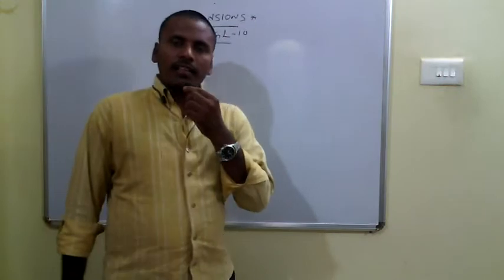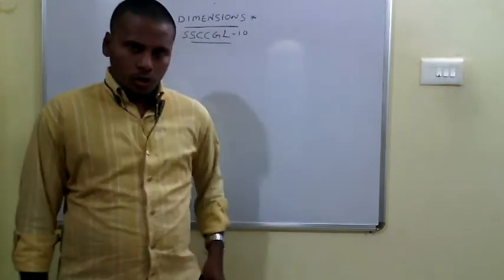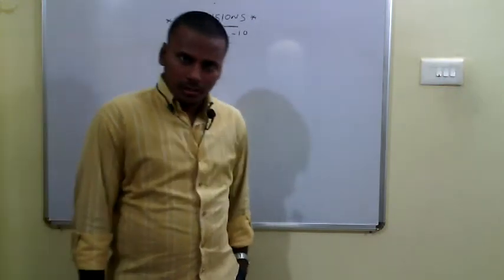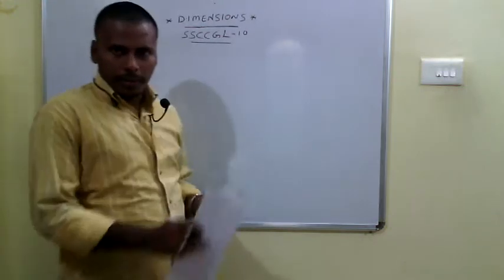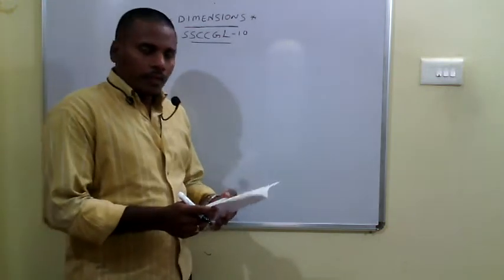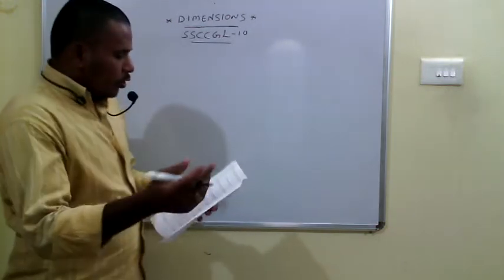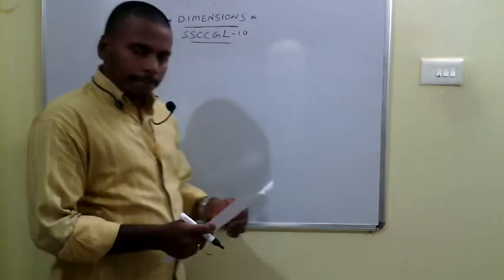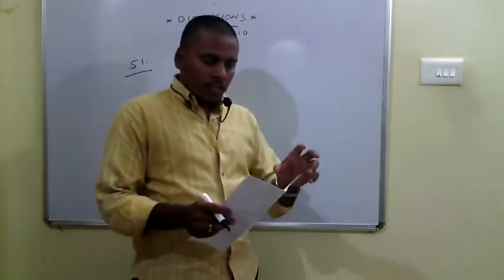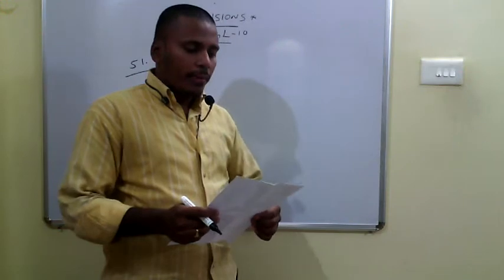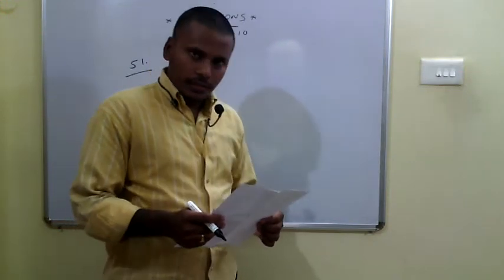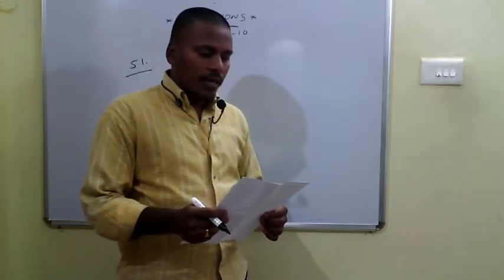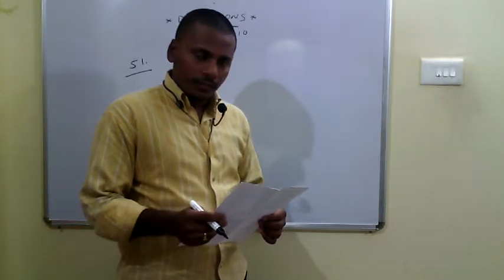Hello friends, this is Gangadhar from Dimensions Gunter, here to discuss explanations for the quantitative questions from CGL 10th paper. The first question is the 51st one: a system has a leak which would empty it in eight hours; a tap is turned on which admits six liters a minute into the system, and it is now emptied in 12 hours.